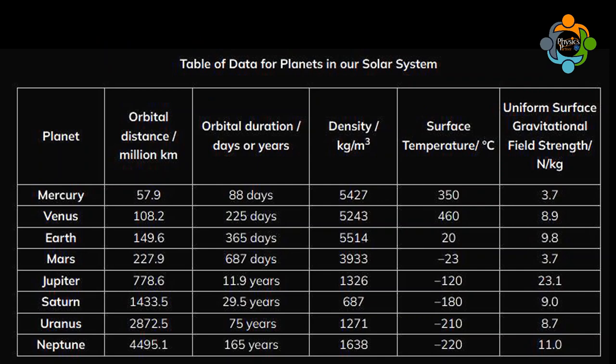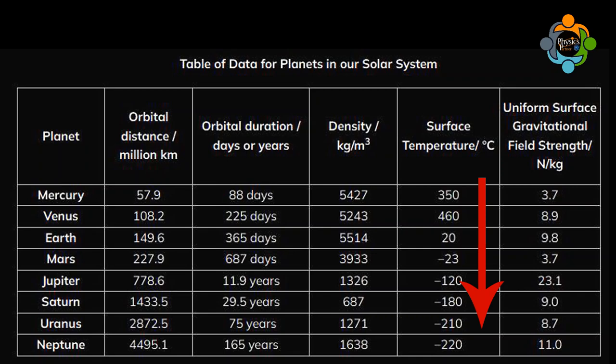There are some observable common themes from the data of the planets. For example, orbital duration — meaning how long it takes to travel around the sun — increases with orbital distance from the sun. Similarly, the circular path that planets travel in has a larger radius, so orbital duration increases with orbital distance. For example, Neptune travels much slower than Mercury. The planets further away from the sun experience a weaker gravitational pull, so they move slower in their orbits.